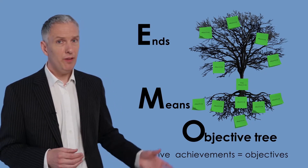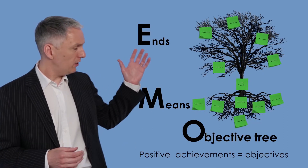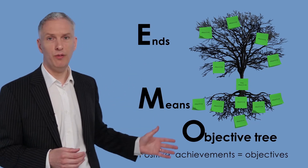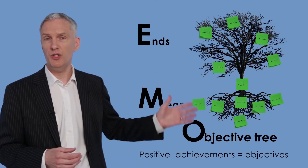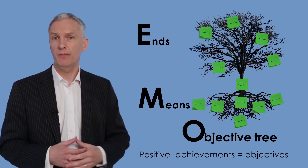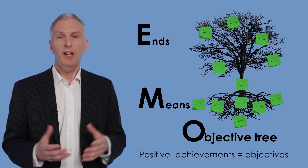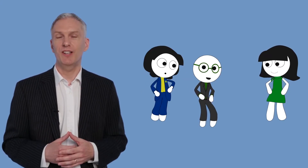Then the validity and completeness of the means and ends relationships will need to be checked. Let's now see how our partners Anna, Boris and Carla carry out this objective analysis.